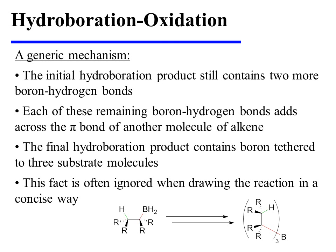The initial hydroboration product still contains two more boron-to-hydrogen bonds, and each of these remaining bonds can add across the pi bond of another alkene molecule. The final hydroboration product therefore contains a boron tethered to three of the substrate molecules. However, this fact is often ignored when drawing the reaction in a concise way, and the hydroboration product is often drawn simply with one substrate.